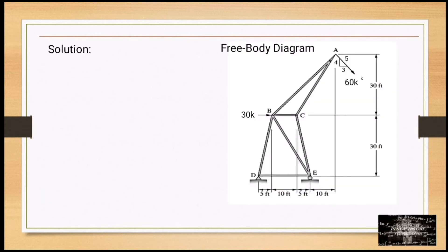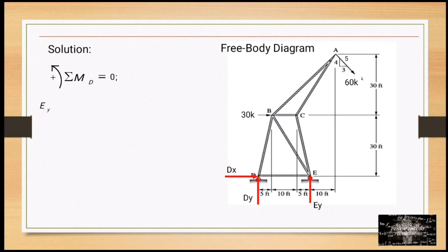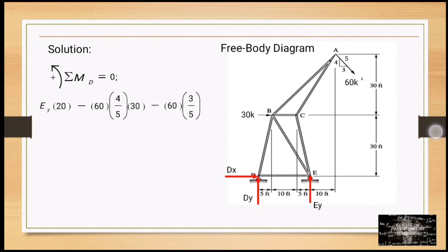For the solution, we draw the free body diagram. At point D, which is a pin support, we have Dy and Dx. At point E, which is a roller support, we have Ey. Taking summation of moments at point D equal to zero (counterclockwise positive) to find Ey: Ey times 20 minus 60 times (4/5) times 30 minus 60 times (3/5) times 30 equals 0. Solving, Ey equals 225 kips upward.